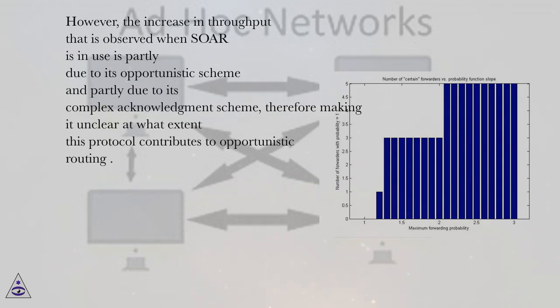However, the increase in throughput that is observed when SOAR is in use is partly due to its opportunistic scheme and partly due to its complex acknowledgement scheme, therefore making it unclear at what extent this protocol contributes to opportunistic routing.